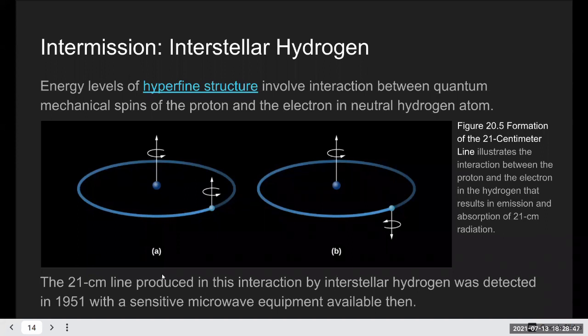This is in the microwave range, microwave region, and people knew to look for this because one, they knew that there must be a lot of hydrogen gas in between stars. In the interstellar medium, the hydrogen is the most abundant element, and it's quite difficult to see when they are cold and neutral.